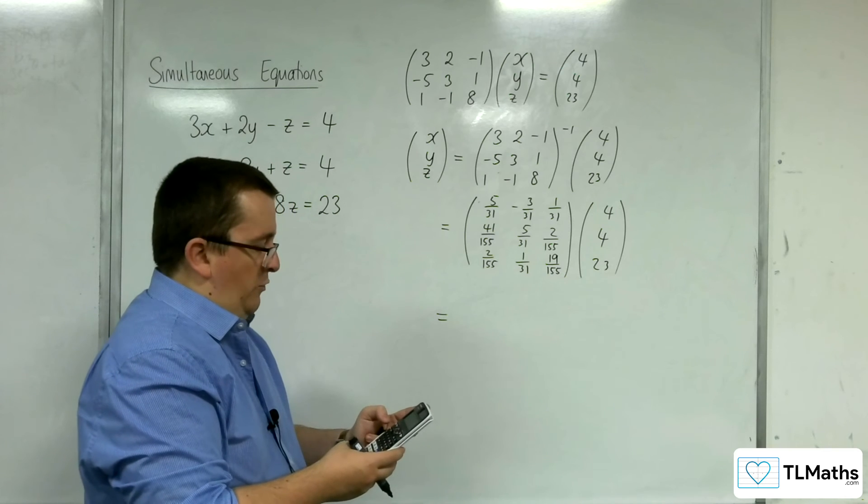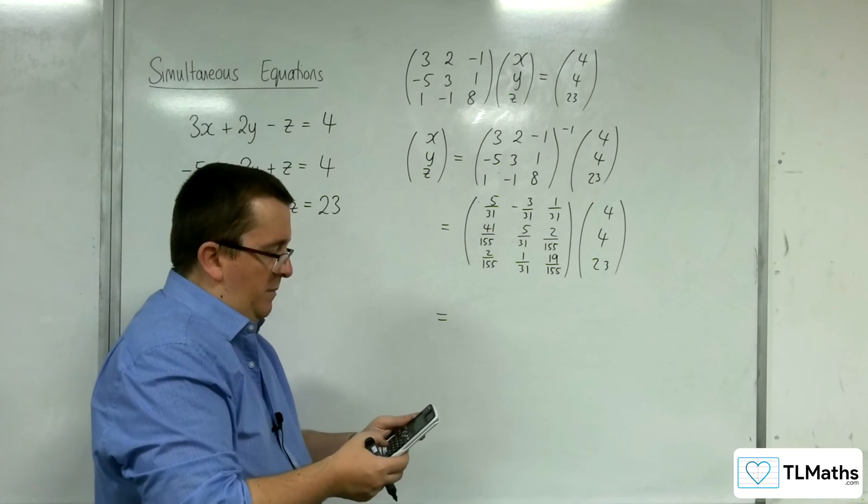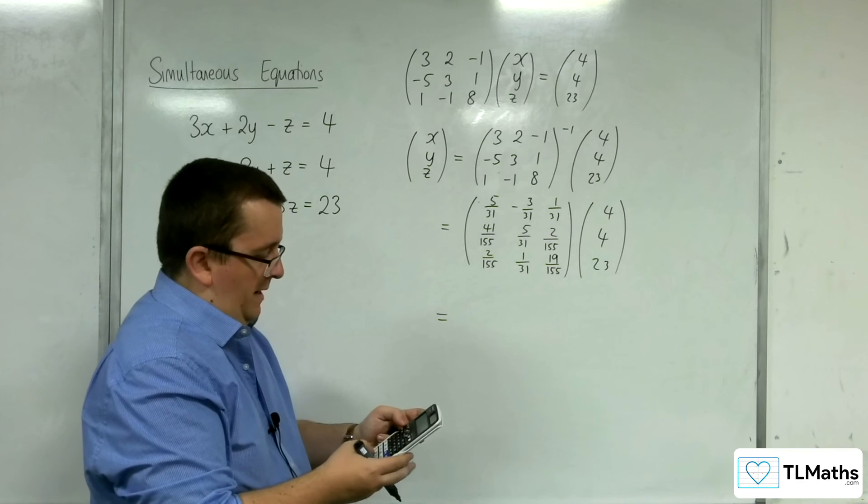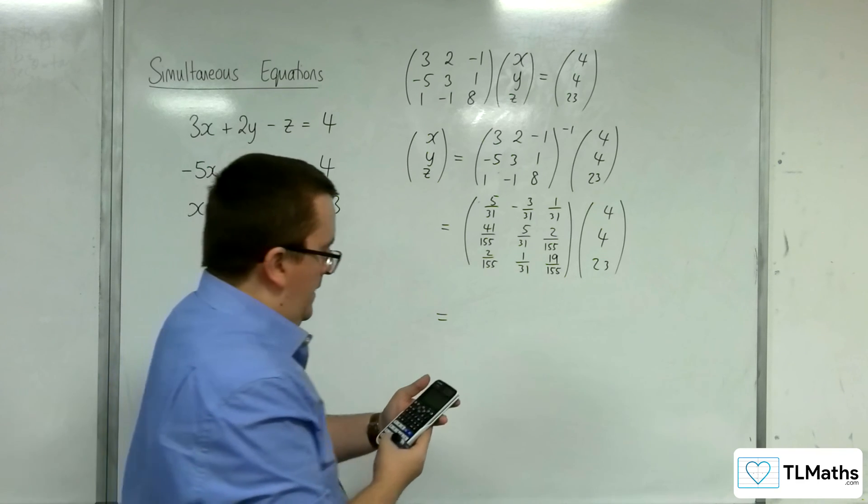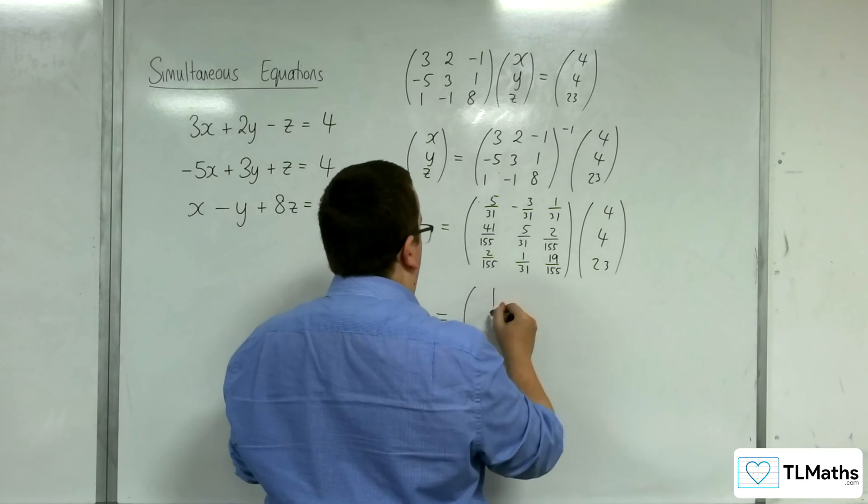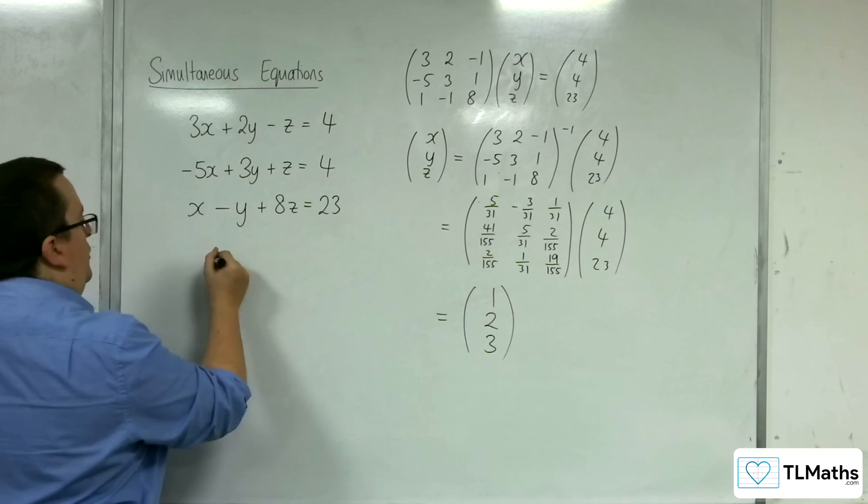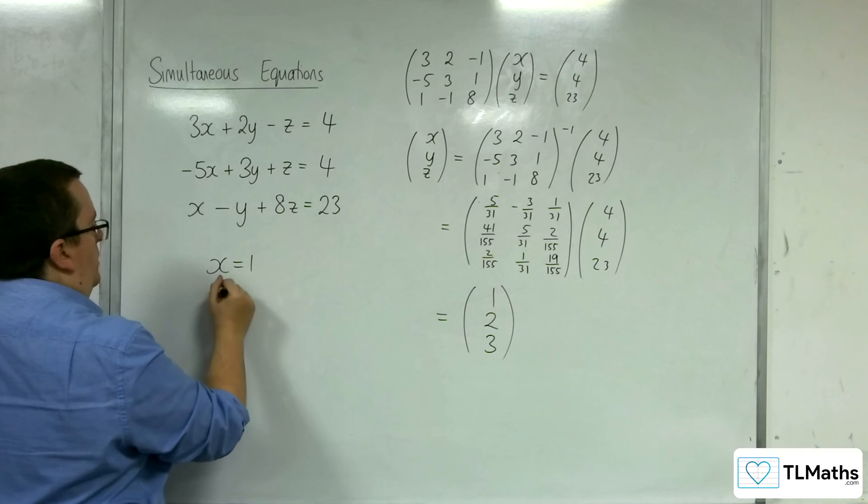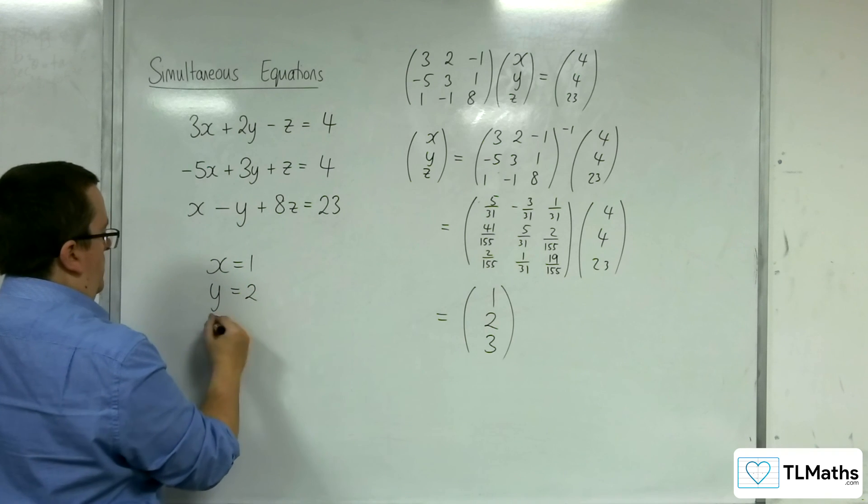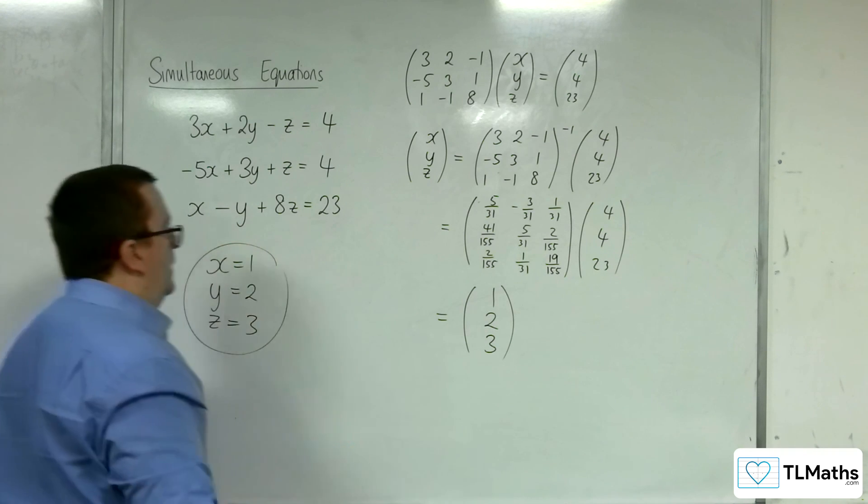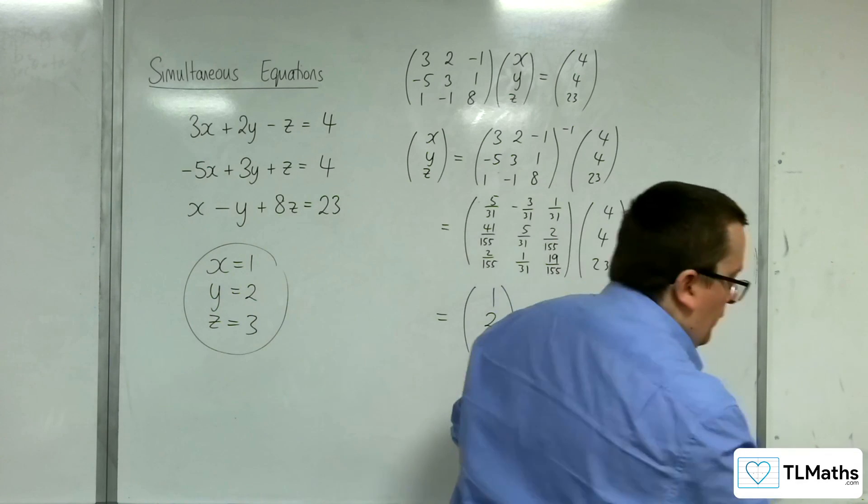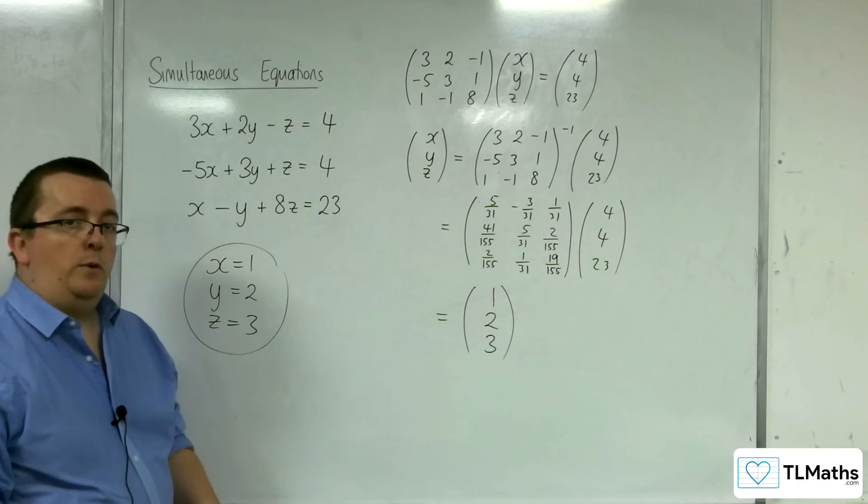So, matrix calculation. Do matrix A to the minus 1 times by matrix B. And we get 1, 2, 3. So, the solutions are x is 1, y is 2, z is 3. And that solves the set of simultaneous equations.